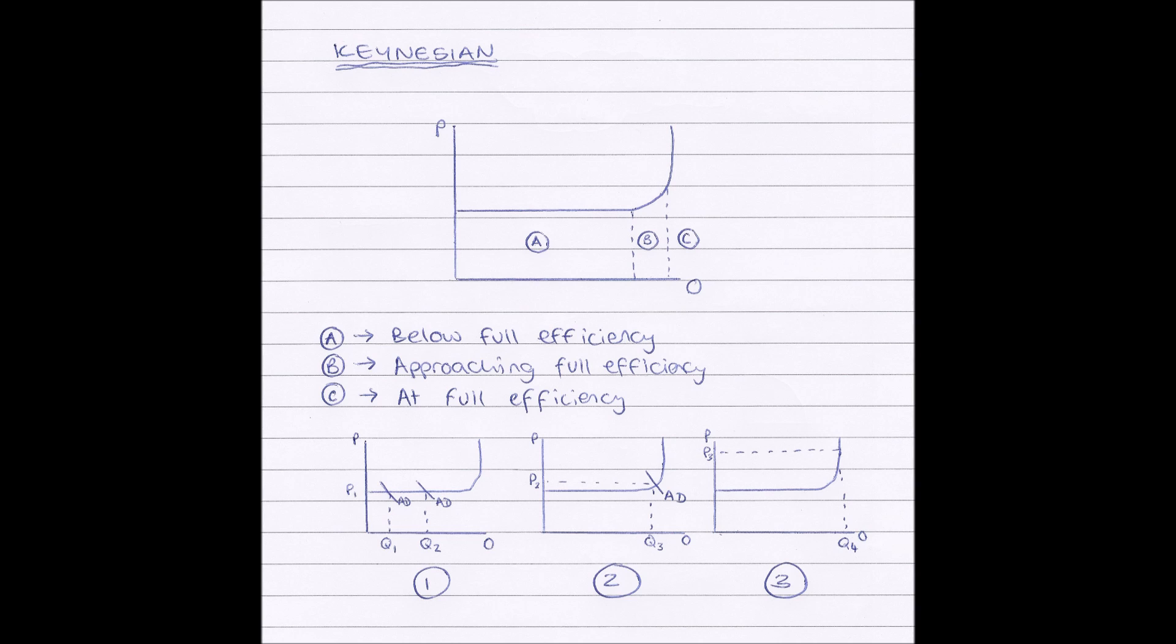So therefore, in section A, if there is an increase in aggregate demand, there is no change in price, but there will be a change in output.